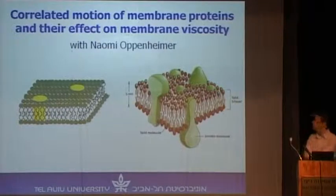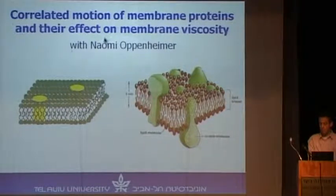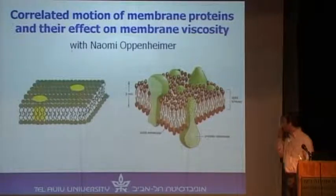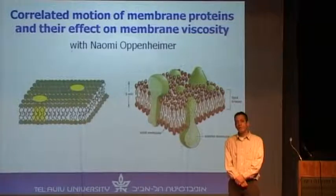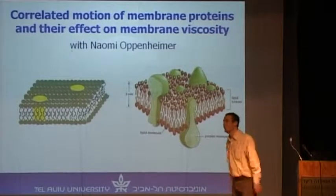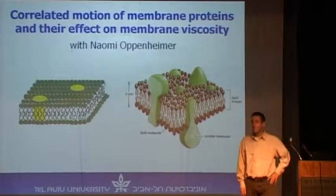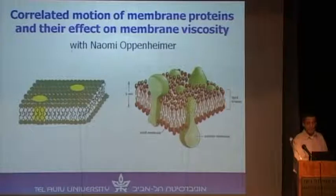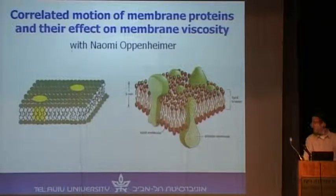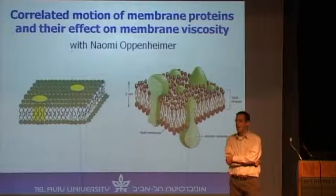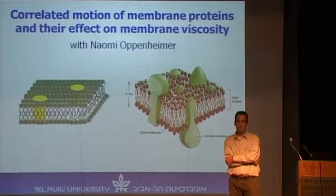I'm going to tell you today about work done by my PhD student Oppenheimer, who couldn't come unfortunately. This work has to do with membranes, or biological membranes. This talk is about how a physicist or a chemical physicist looks at a biological membrane. On the right is a cartoon of a biomembrane made by biologists, and this is a cartoon made by Nomi. You can already see the difference.